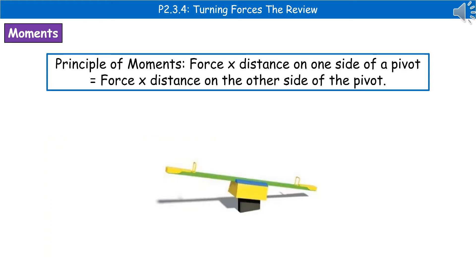We can use this idea of moments in the principle of moments. If we have a seesaw, we can get to a point where it's balanced. What we find is that if the anticlockwise moment is equal to the clockwise moment, then it's balanced. That's what the principle of moments is: force times distance on one side of the pivot equals force times distance on the other side.